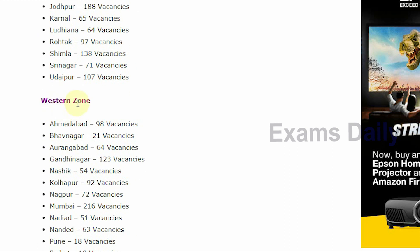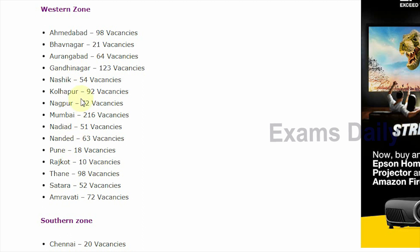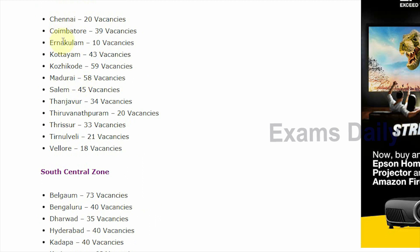For the western zone, cities include Ahmedabad, Bhavnagar, and Aurangabad. Kindly check your place, district, and their vacancies. Next is the southern zone, which includes Chennai, Coimbatore, Ernakulam, Kottayam, Kozhikode, Madurai, and others.